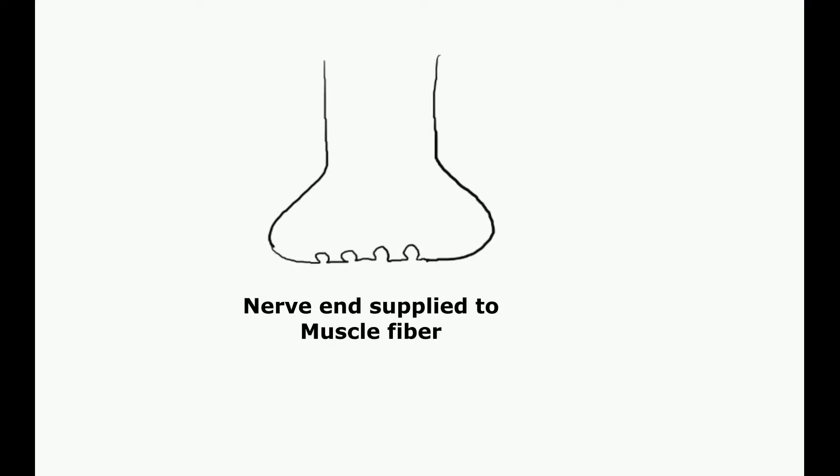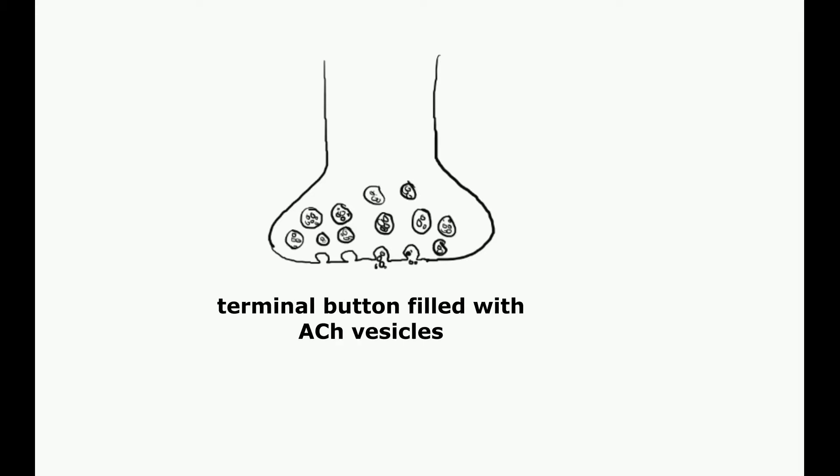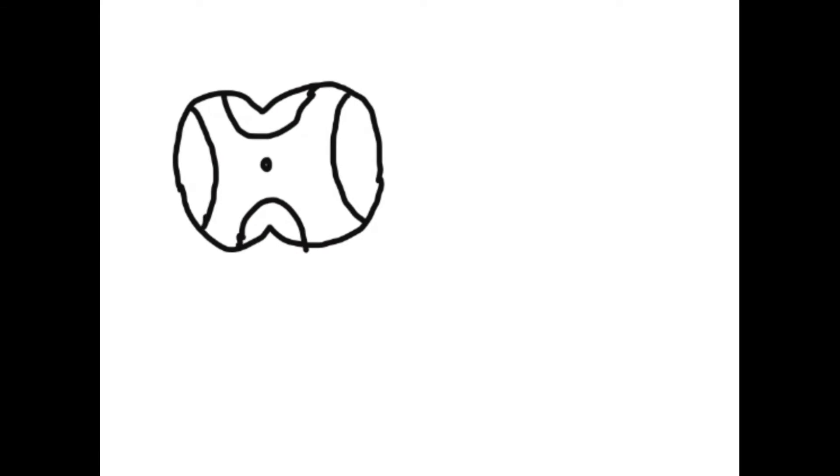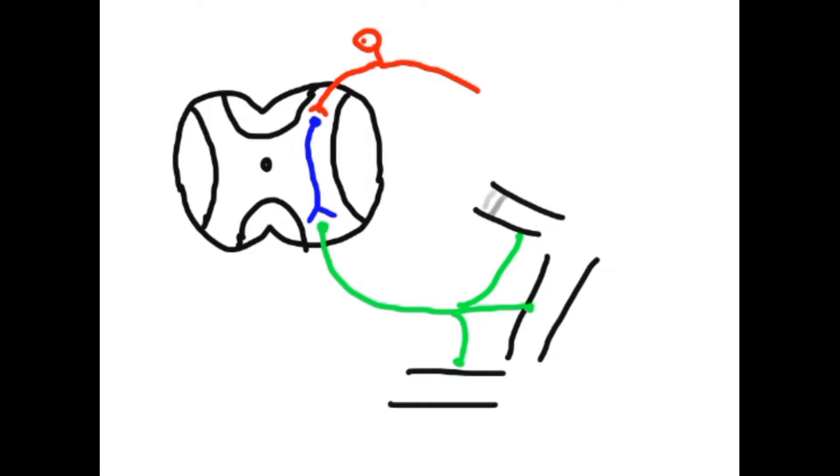The terminal part of the motor neuron which supplies the muscle is known as the neuromuscular junction, which fills with neurotransmitter acetylcholine vesicles. This is part of the motor neuron which emerges from the anterior horn cell of the spinal cord, shown as a green color indication, which supplies to a number of muscle fibers.